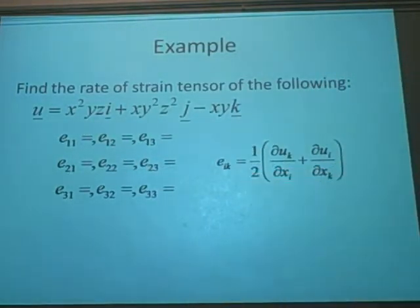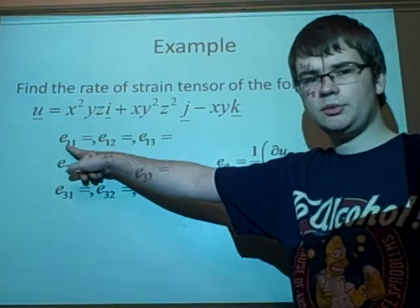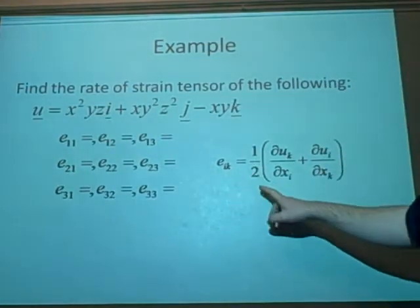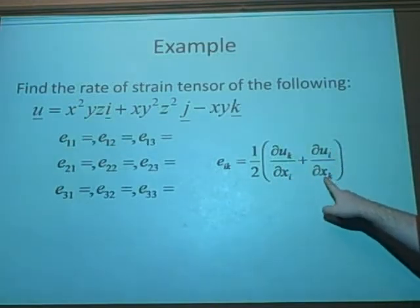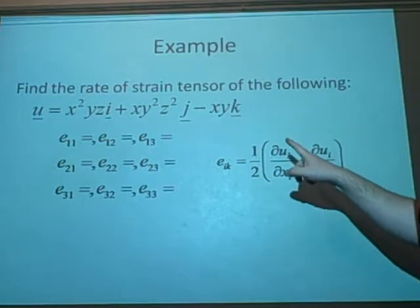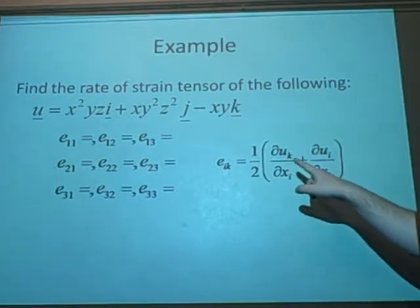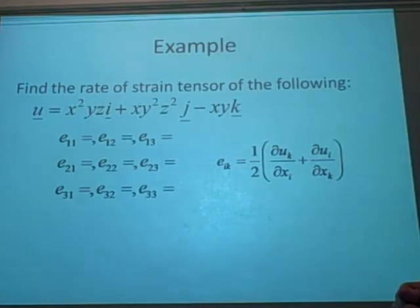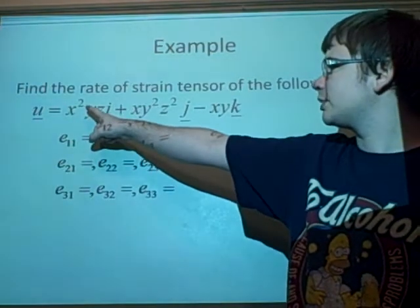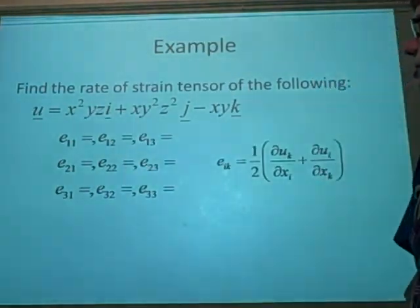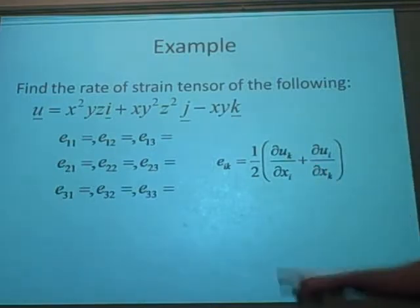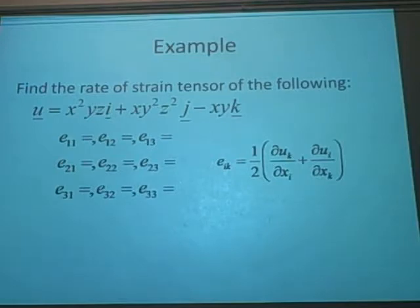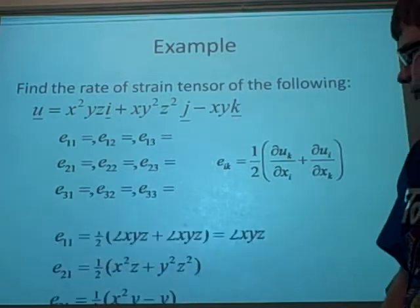And we're going to use this equation here to calculate them. So if we do the first one, e11, we'll put that into here, gives us a half, u1 of x1 plus u1 of x1. So we want u1 is i and x1 is just x. So we differentiate that with respect to x. That'll give us 2xyz plus 2xyz. 4xyz divided by 2 is 2xyz.